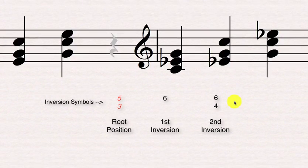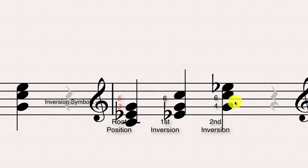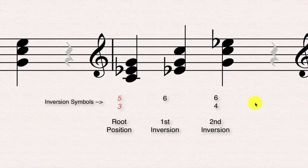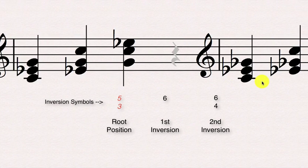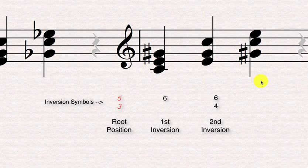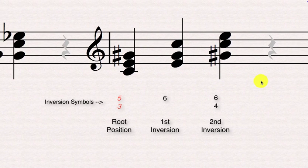So those are the three types of positions you can have for any triad, and this will work for major, minor, diminished, and augmented. Just to show you, we have our minor triad here in root position, first inversion, and second inversion. You can have it with a diminished triad and the augmented triad — same thing.